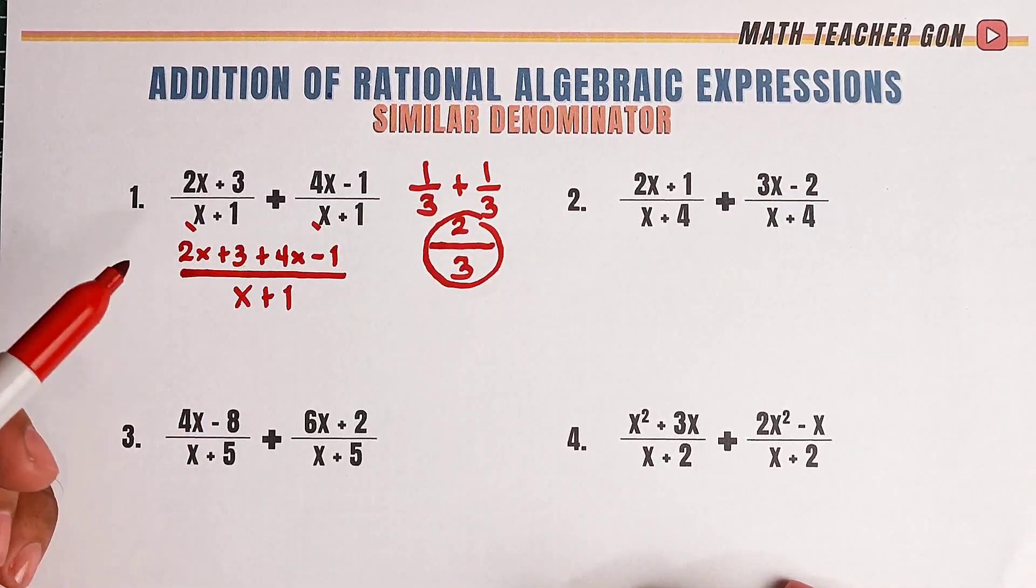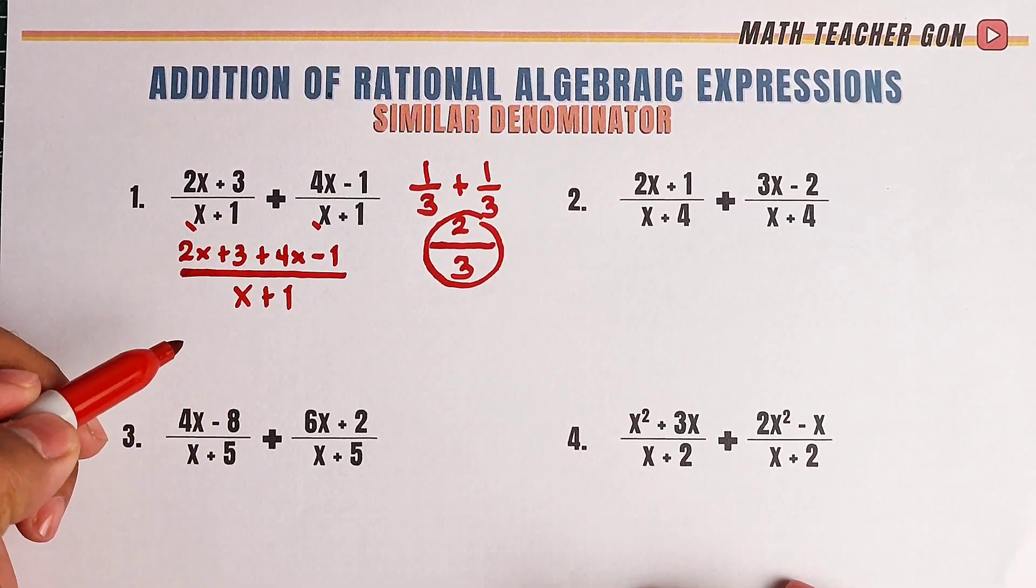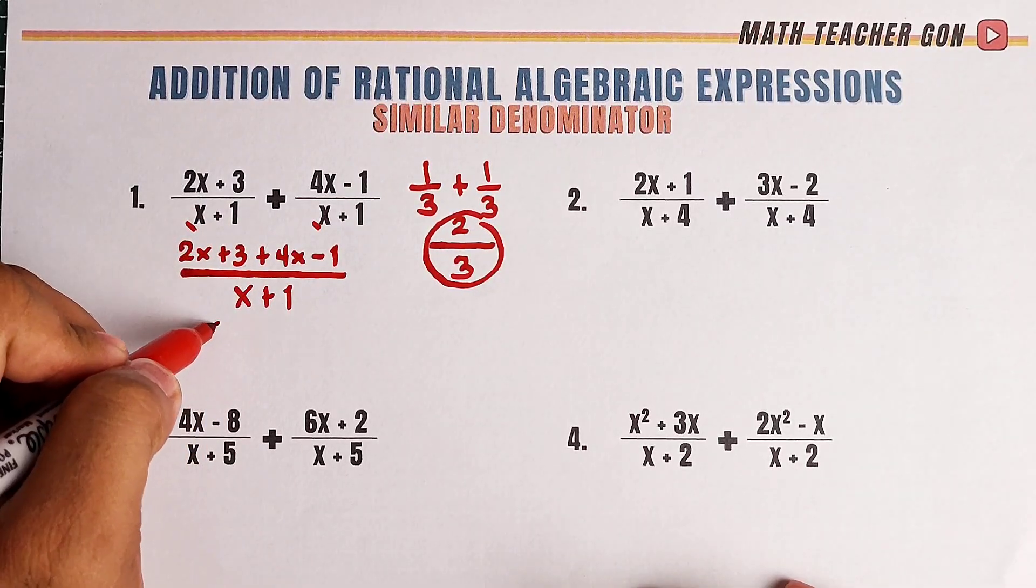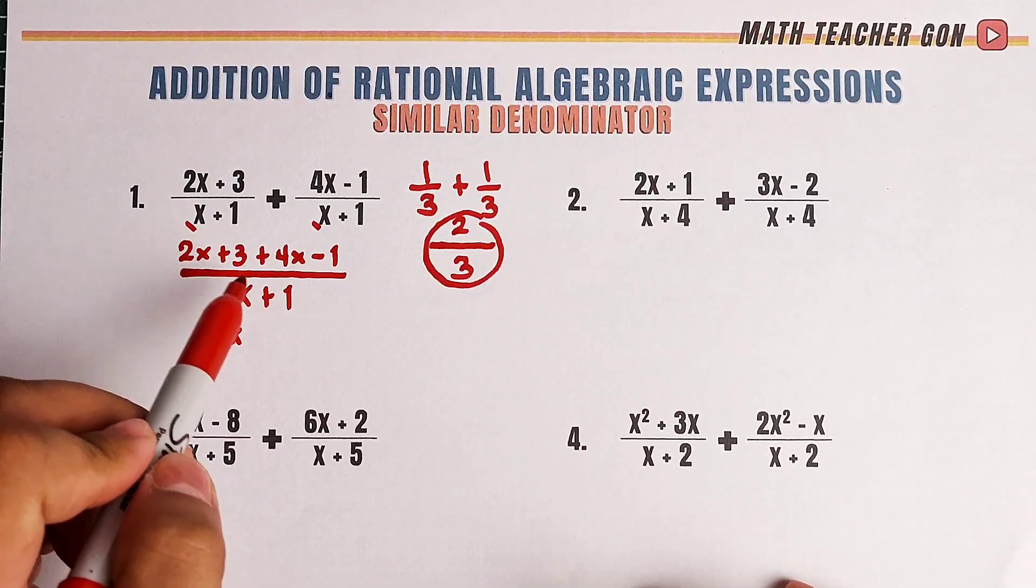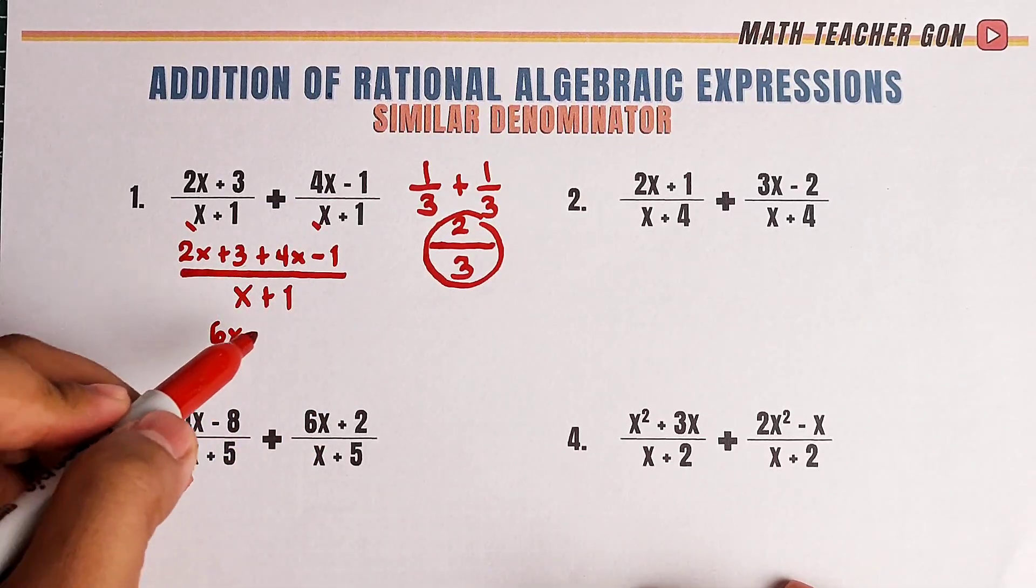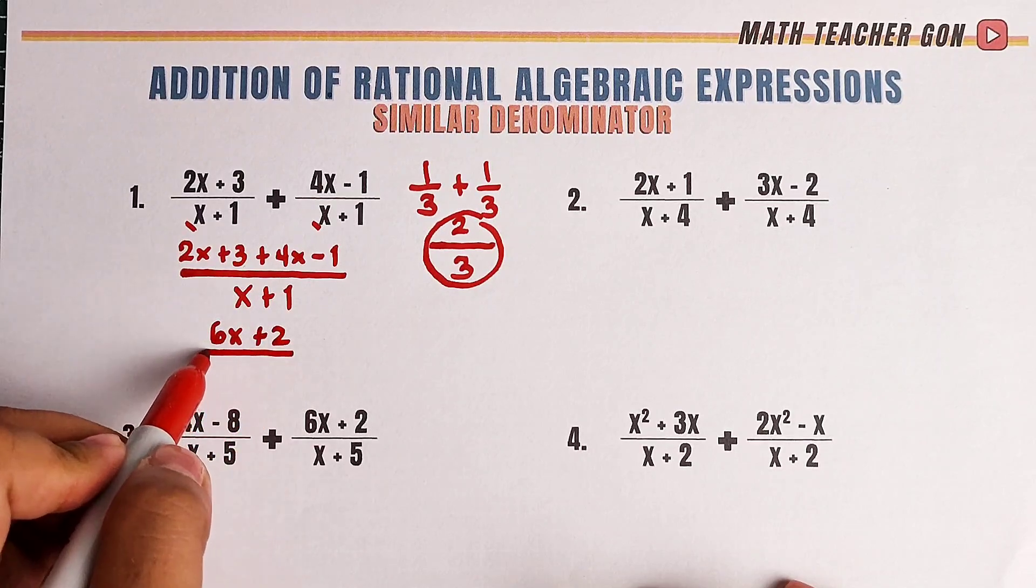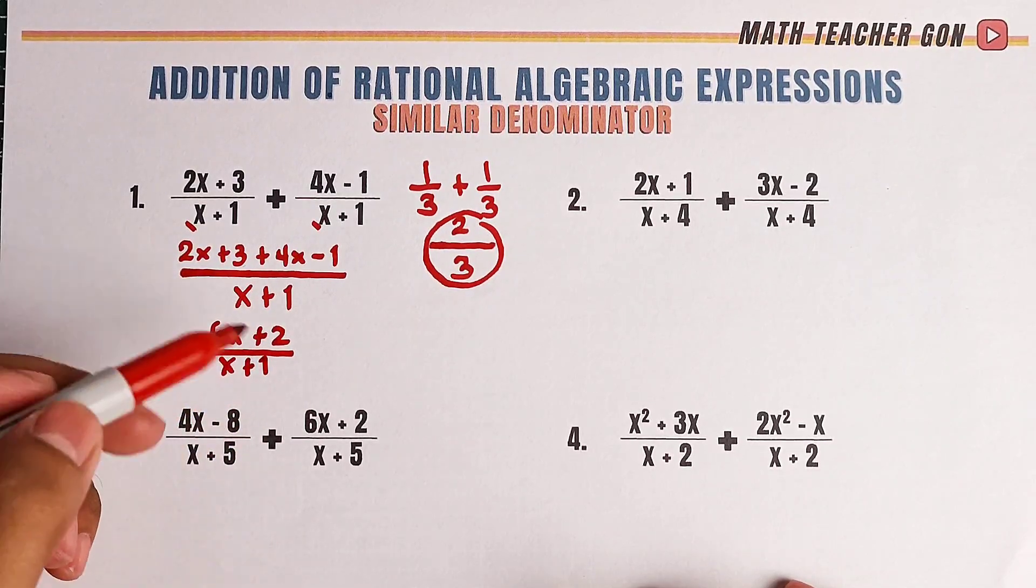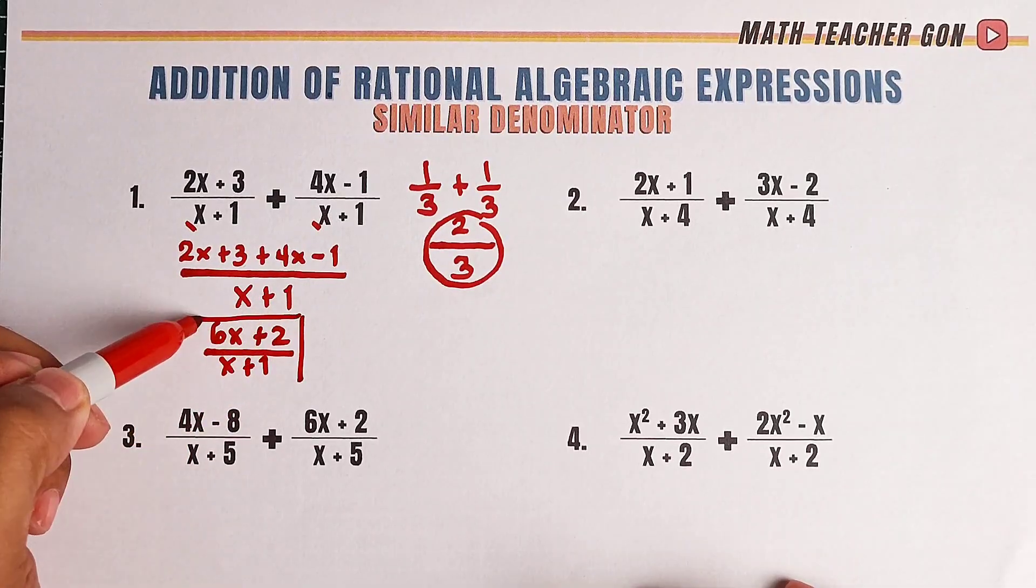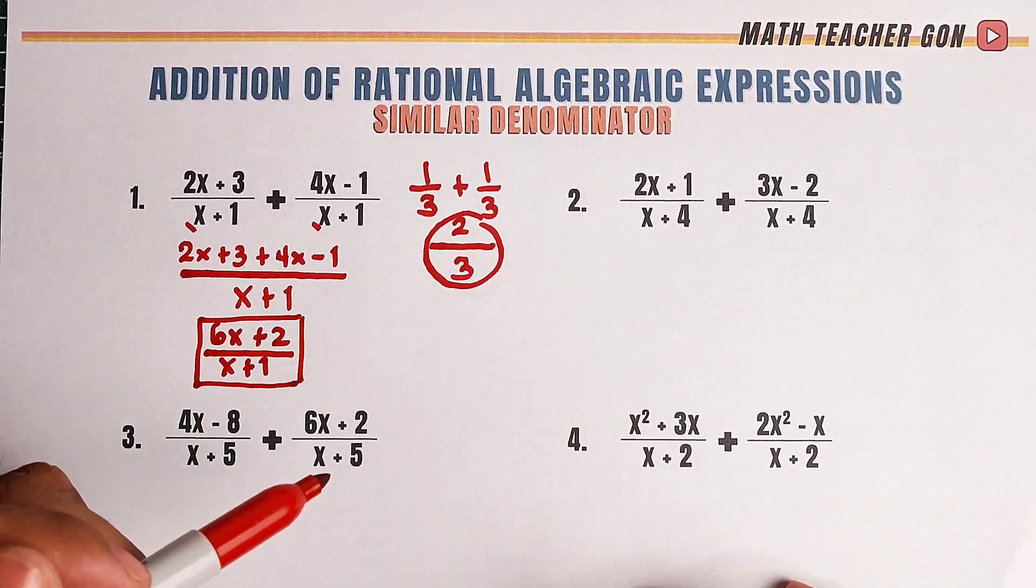Here, we have 2x plus 4x. We can combine these two. That would be 6x. Then for the constants 3 minus 1, that would be plus 2 or positive 2. And then simply copy your denominator x plus 1. And as you can see, this is now the sum of the two rational algebra expressions.